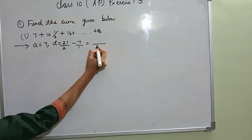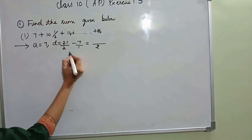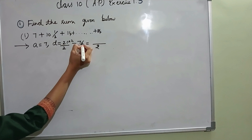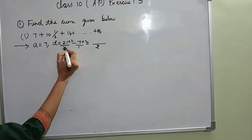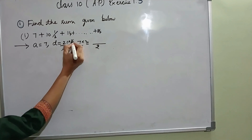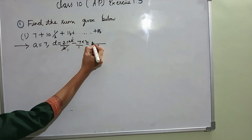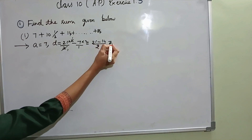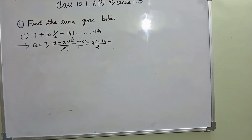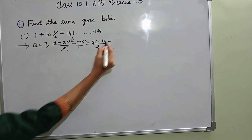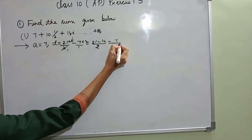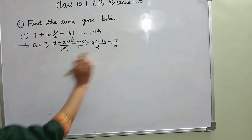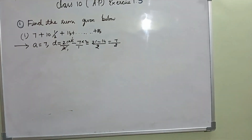We need to find the LCM, that is 2. This LCM I should multiply to both terms. 2 ones are 2; 21 minus 2 sevens are 14. 21 minus 14 is 7. So 7 by 2 is the D.